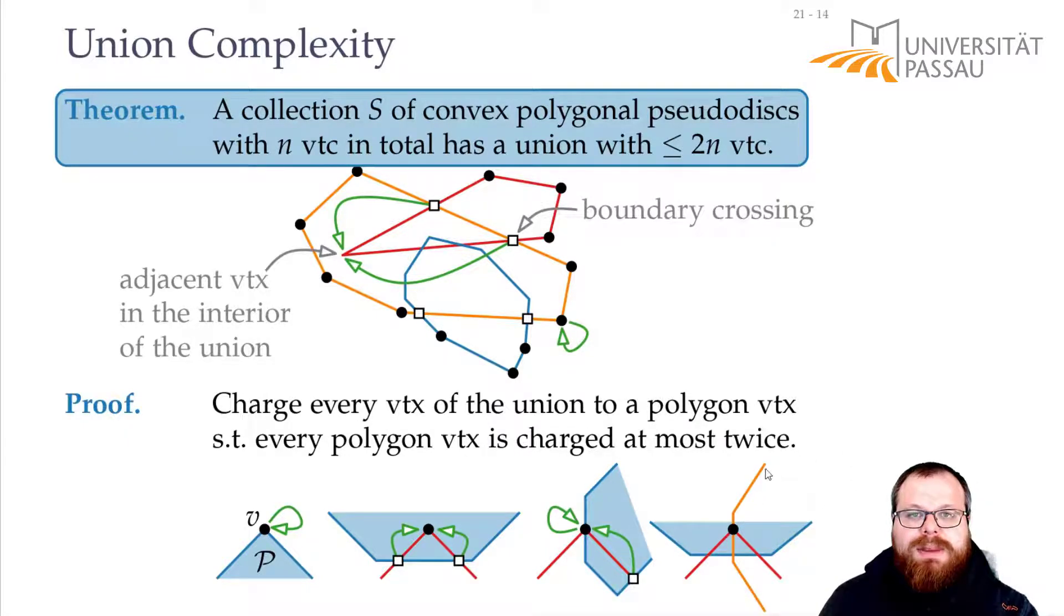And it can also be that we have something like this. We have a boundary crossing of the orange here, two of the red ones here, the red ones charge to this one, the orange charges to this one up here.